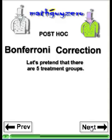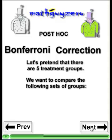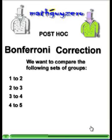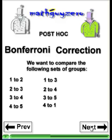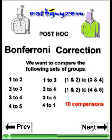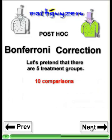Let's do an example. Say we have five treatment groups and we want to compare the following sets: group 1 to 2, 2 to 3, 3 to 4, 4 to 5. Then 1 to 3, 2 to 4, 3 to 5, 4 to 1. And lump group 1 and 2 compared to lump group 3 and 4, and also groups 1 and 2 versus groups 4 and 5. That's 10 different comparisons, but we only had five groups.